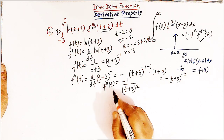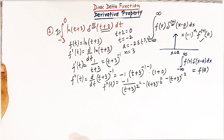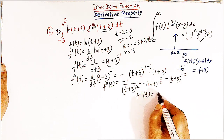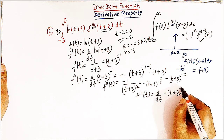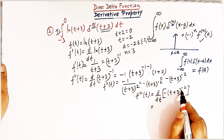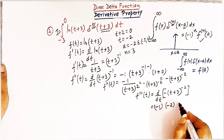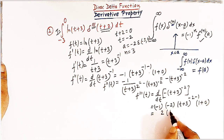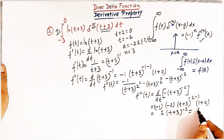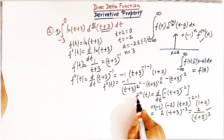Now let us find the third derivative. We differentiate −(t + 3)^(−2) with respect to t. Applying the chain rule and power rule: the third derivative f'''(t) = d/dt of −(t + 3)^(−2) = −1·(−2)·(t + 3)^(−3)·1 = 2·(t + 3)^(−3), which equals 2/(t + 3)³. This is the third derivative of f(t).